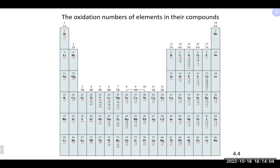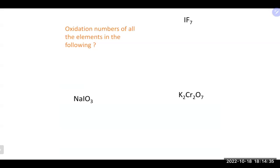Looking at a periodic table showing common oxidation states: many elements like chlorine and nitrogen have multiple possible oxidation states. For transition metals, +2 and +3 are most common. Let's practice assigning oxidation numbers for the elements in: sodium iodate (NaIO₃), iodine heptafluoride (IF₇), and potassium dichromate (K₂Cr₂O₇).